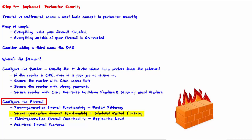Third-generation firewall functionality is application-level. Filtering occurs at layers 1, 2, 3, 4, and 7. The addition of layer 7 — the application layer — allows deep packet inspection. This allows you to filter by specific criteria for specific applications such as HTTP, HTTPS, FTP, DNS, etc., giving you extremely fine control. Exactly how much fine control you get will be dependent upon the specific abilities of the firewall you're using.